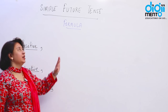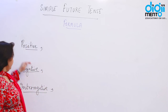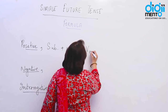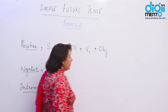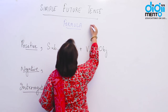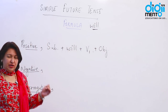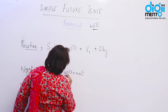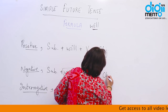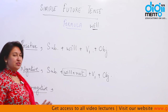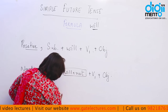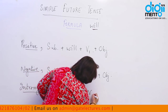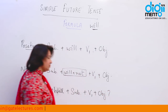Now let's look at the formula and sentence structure of your simple future tense — positive, negative, and interrogative. The positive structure is: Subject + will + verb in first form + object. For negative it is: Subject + will not (won't) + verb in first form + object. For interrogative, since we always move the helping verb before the subject, it is: Will + subject + verb + object.